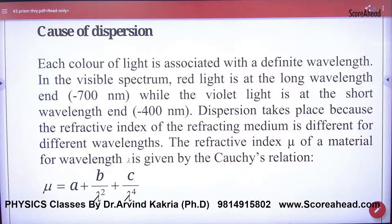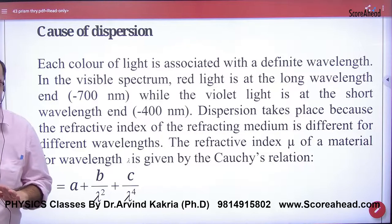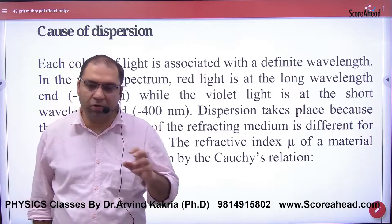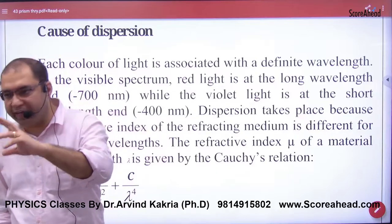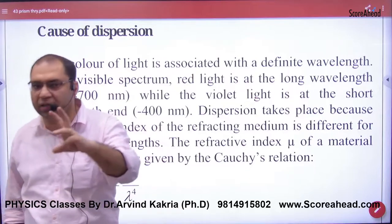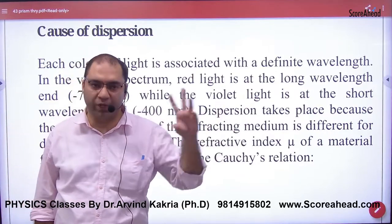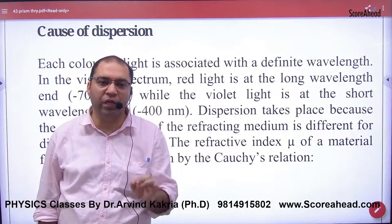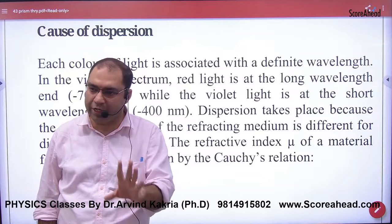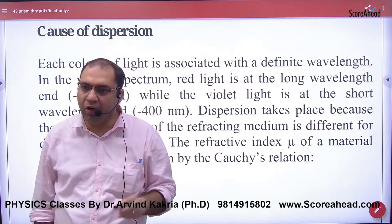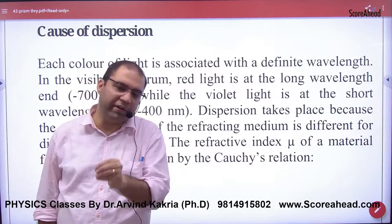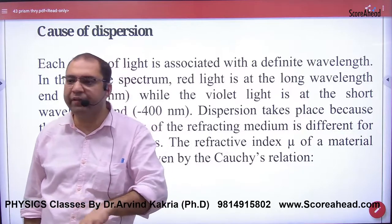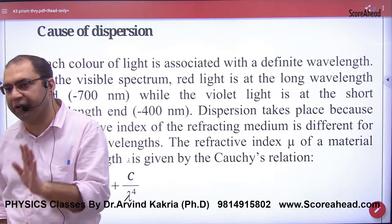So in the cause of dispersion, why did the dispersion happen? When white light came, why did the split happen in 7 shades? Because the wavelength of 7 shades is different, and since the wavelength is different, the refractive index is different.